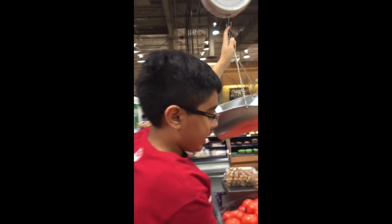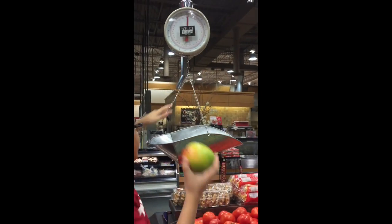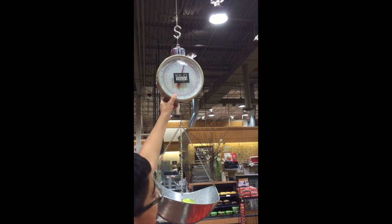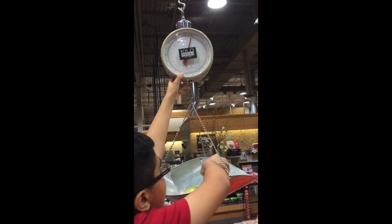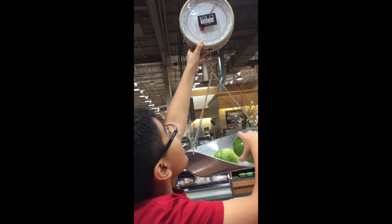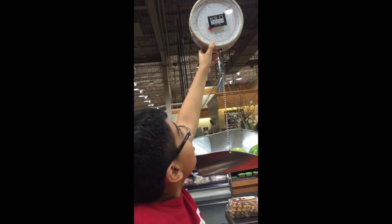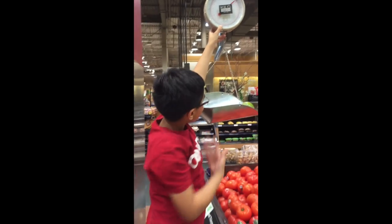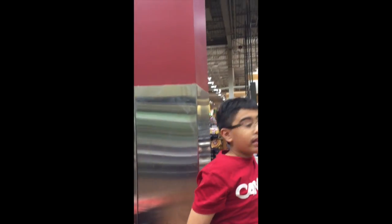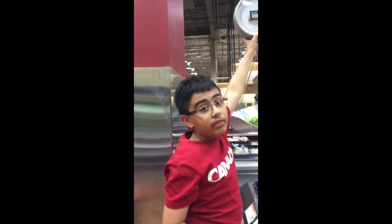So for example I can take something like a mango, put it on, don't pull on it, just display. It's around half a kilo. Now if I put another mango, it's around one kilo. And one last mango and it's around 1.5 kilos. So as you can see, each mango is around half a kilo. All together it actually shows 1.5 kilos.